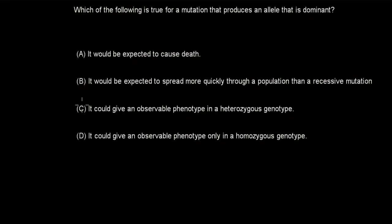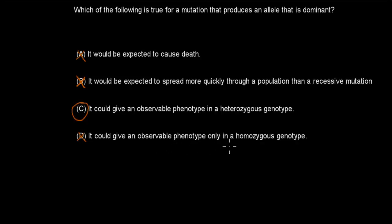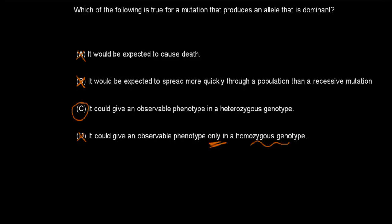Welcome back. The correct answer is C. A is wrong because while sometimes mutations do cause death, they can also be beneficial — so they don't always cause death. B is false — being dominant or recessive doesn't make an allele spread faster; it just affects the phenotype, not the spread through the genotype. D is false because a dominant allele also gives an observable trait in heterozygous genotypes, not only in homozygous ones. So C is the most correct.